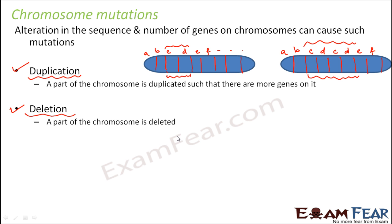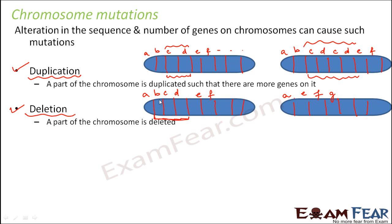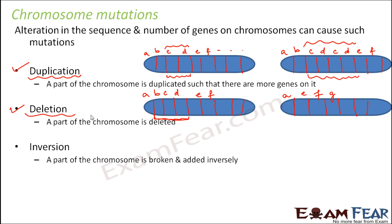Another way is deletion at the chromosomal level, where a part of the chromosome itself is deleted. Here we are not bothering the sequence of bases in the nucleotide — the DNA is intact — but we are removing a portion from the chromosome itself. If we remove a portion, say B through D, then after A you will have E, F, G and so on, and that portion is simply gone. Whatever genes were present in that portion are now missing, so the traits those genes were controlling will also be missing because the proteins for those traits were not synthesized.